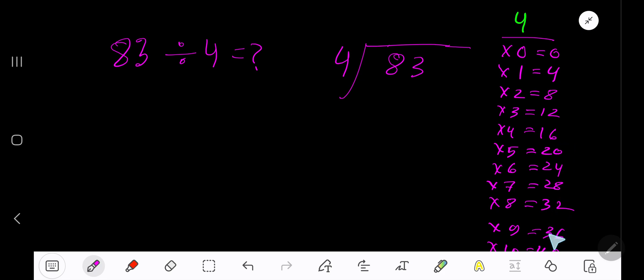This process continues. 4 goes into 8 how many times? 4 goes into 8 two times. 2 times 4 is 8. Subtract, bring down another digit: 03. 4 goes into 3 how many times? 0 times, as 3 is less than 4. 0 times 4 is 0. Subtract: 3. This 3 is the remainder, so our answer is 20 remainder 3.